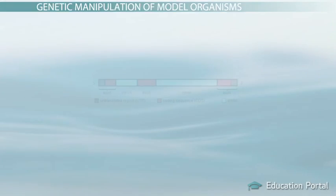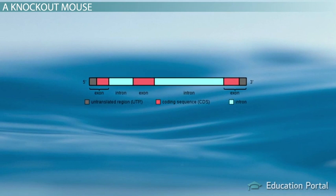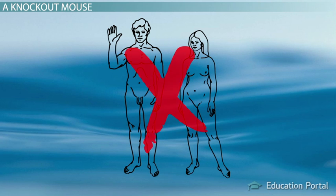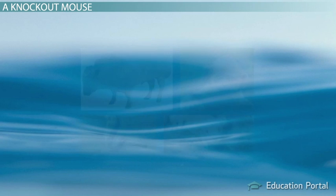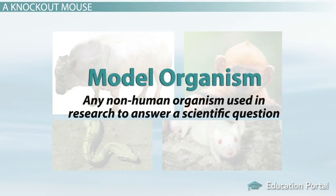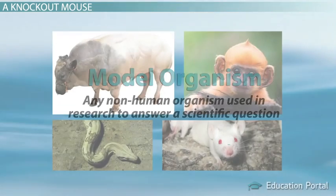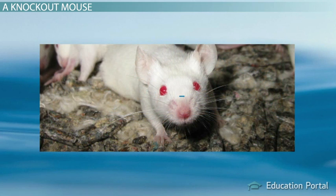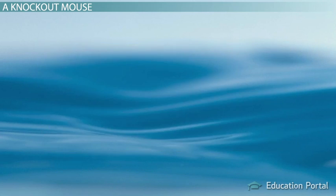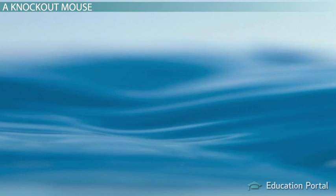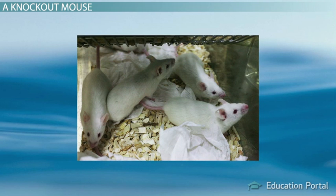So how do we take away this UFO gene? We might be interested in how this UFO gene functions in humans, but we can't take genes away from humans very easily or ethically. Therefore, the first thing to do is decide which model organism to use. A model organism is just any non-human organism used in research to answer a scientific question. In this lesson, we'll talk about a basic method to delete the UFO gene in a mouse. Mice are popular model organisms because they are mammals, like us, with 99% similarity in genome to humans. They are also reasonably cheap, easy to raise, and have a short generation time.